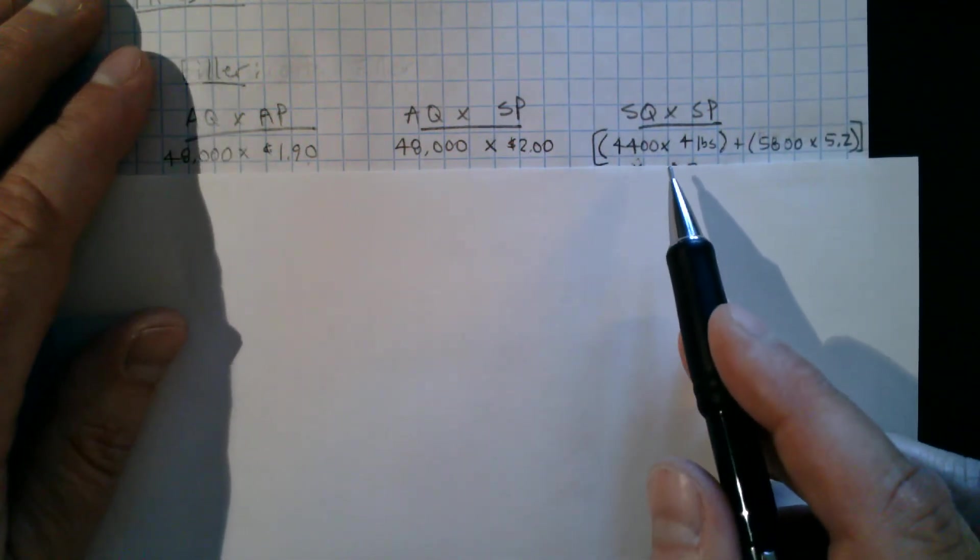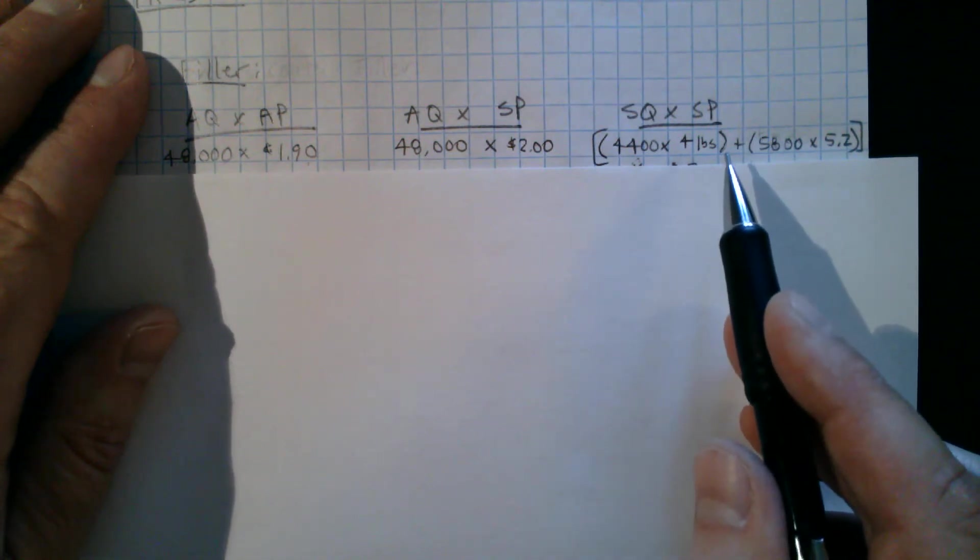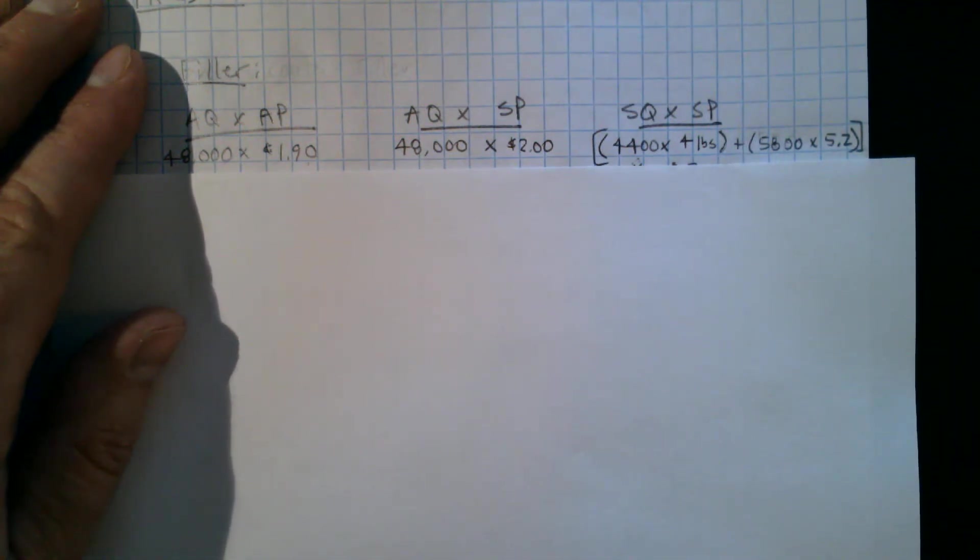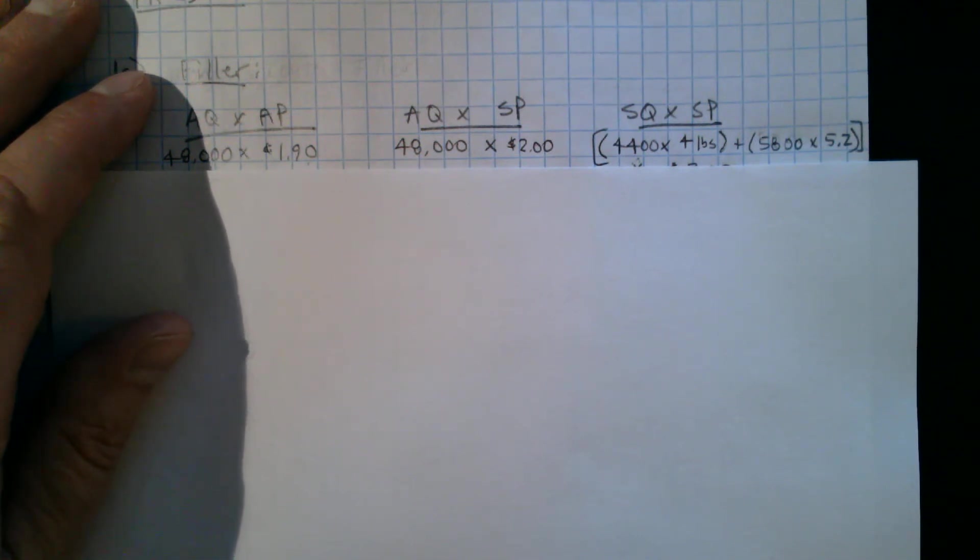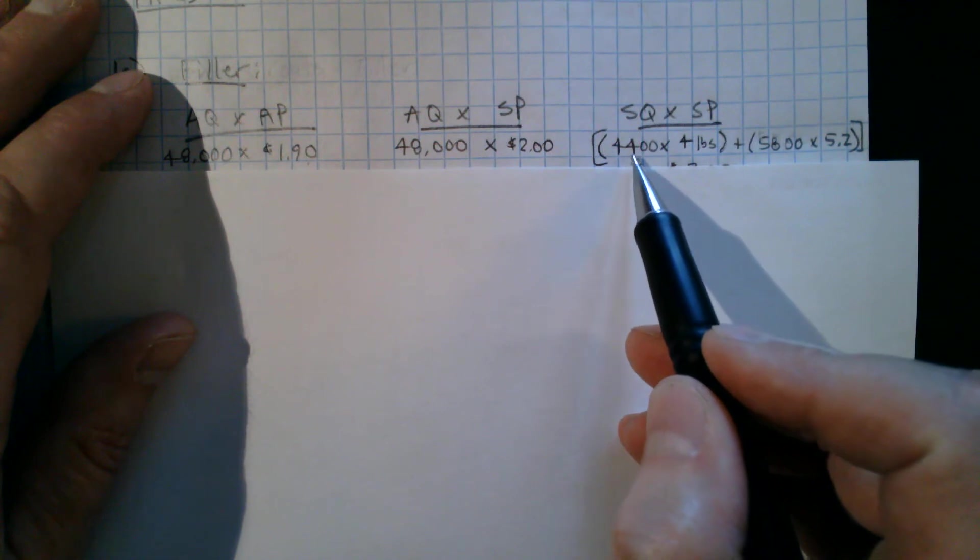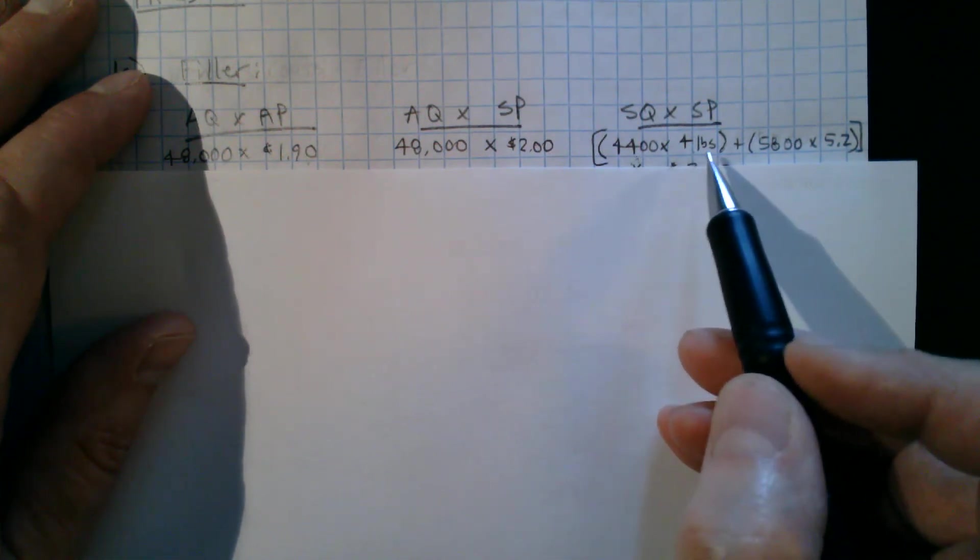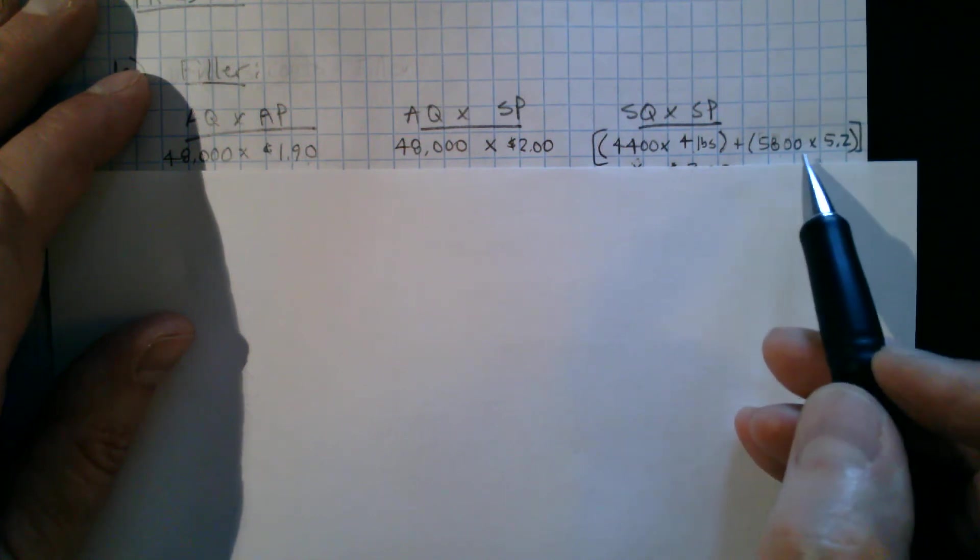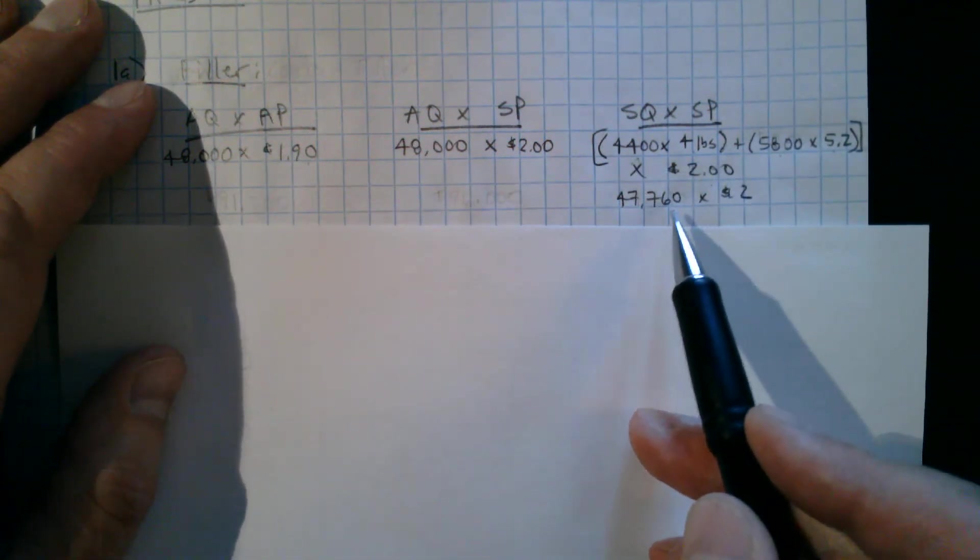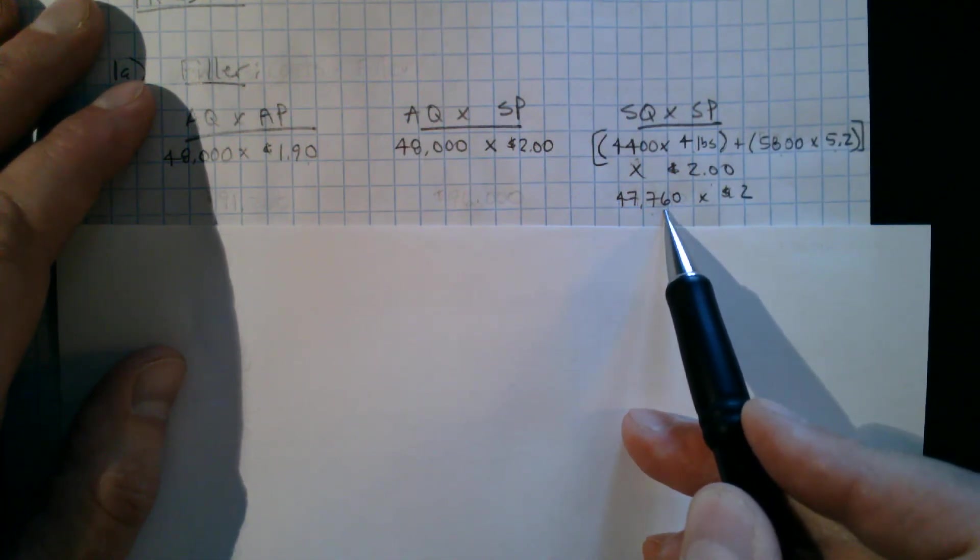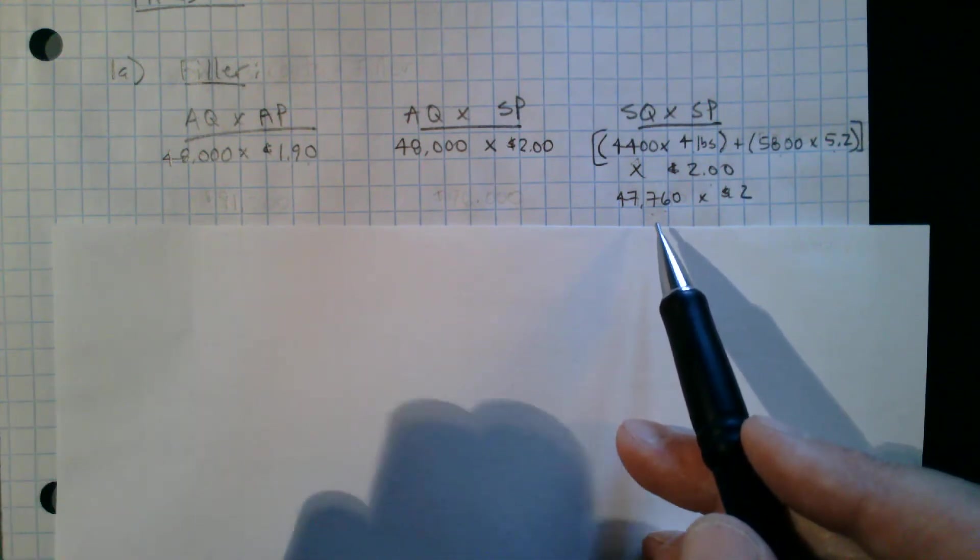And then over here, if a student gets this wrong 90% of the time, it's right here. And usually the mistake they make is they take the planned production times the standard. Well, if you think about it, if you produced more or less than the plan, you'd want to be judged against what you did, not against what the plan was, which might have been much lower or much higher, and caused you to use more material for a valid reason. So what I want to know is how much liner material should they have used for that level of production. So the 4,400 coats they actually produced for women should have used 4 pounds each. The 5,800 coats that they did produce for men should have used 5.2 pounds each. So that gives me, and times the standard price of $2. So that gives me 47,760 pounds of material they should have used at that level of production if they had consumed according to standard.